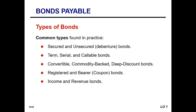Commodity-backed bonds are linked to specific assets — the textbook has a great explanation of those. Deep discount bonds are bonds sold at a discount from the beginning; the buyer receives the implied interest at maturity. For example, at the original issue of a one-thousand-dollar bond, perhaps the person only pays nine hundred dollars, receives no interest over the term of the bond, but gets the full one thousand at maturity. Registered bonds are registered in the names of the holders, so when they change hands it requires a new certificate to be reissued.